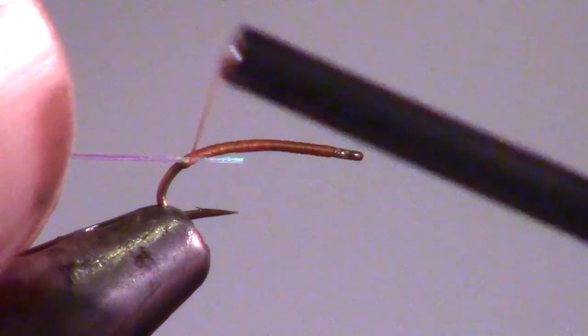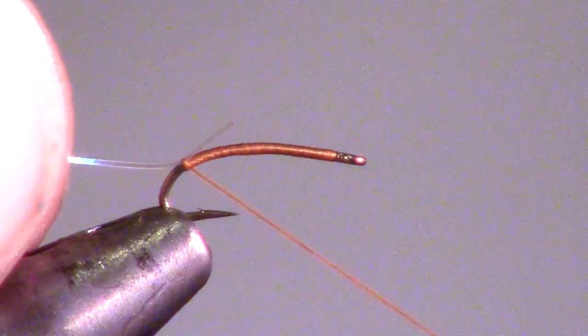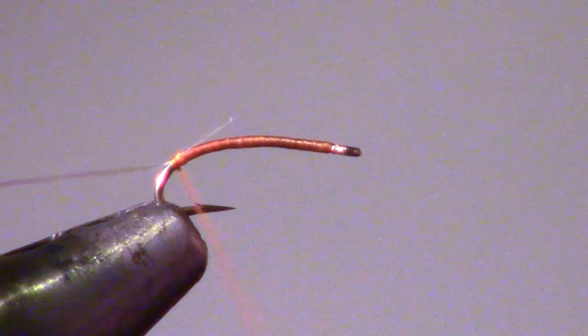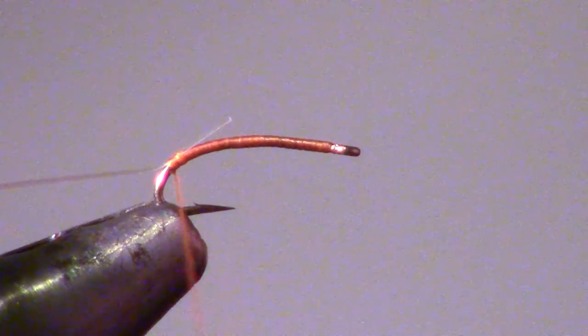Now we will want to take a piece of pearl flashaboo and attach it close to the bend of the hook. The size of flashaboo will depend on the size of your hook. In this case I am using 1 1 100th size.